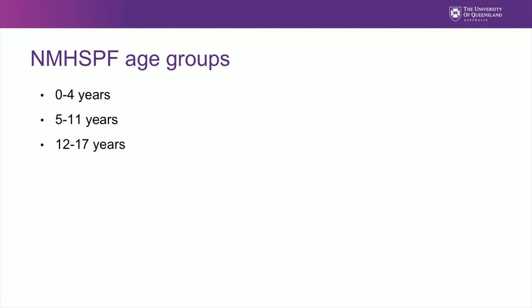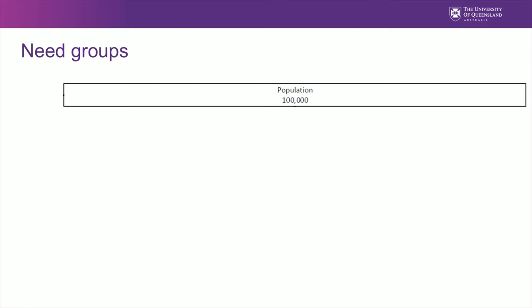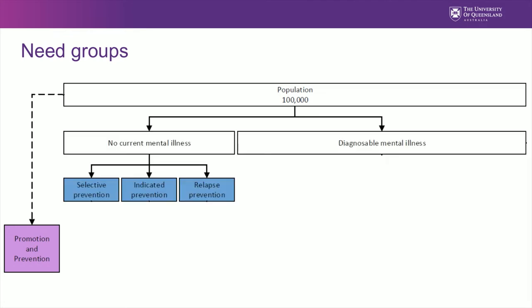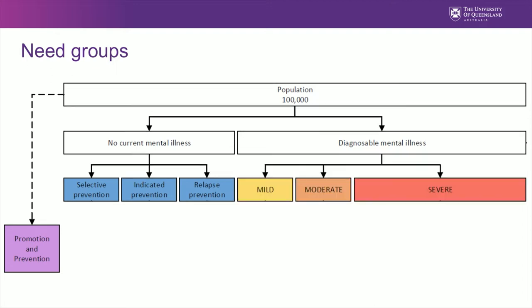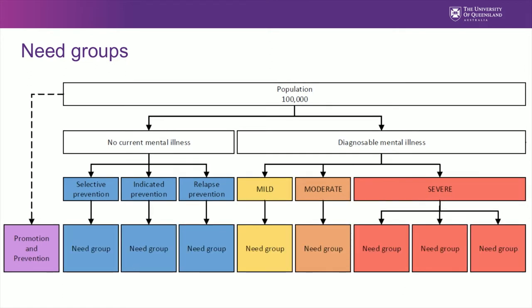The model starts with an average Australian population within each of six age groups. Rates of need within each age group are modelled for a nominal population of 100,000 people. Mental health promotion and mental illness prevention apply to the whole population, but otherwise a proportion of each age group is identified as having mental health service needs. This is further broken down by severity of illness, functioning and other factors to create need groups of populations with similar levels of mental health service need in a year.